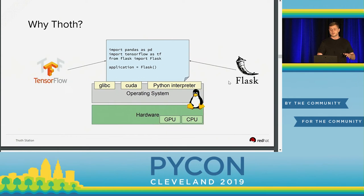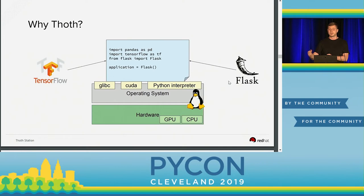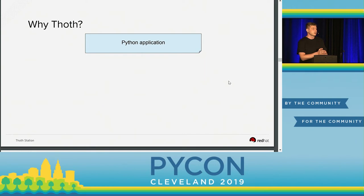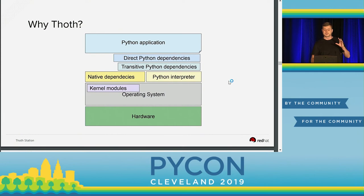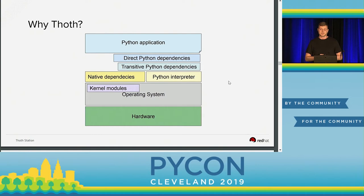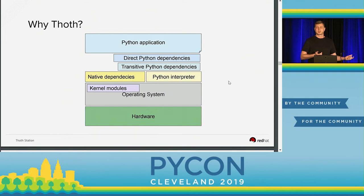The operating system runs on some hardware — you have different types of CPU and different types of GPU. So we are basically multiplying with more and more combinations. If we abstract what I've just described: we are developing a Python application that has direct dependencies, which also have transitive dependencies, running with a Python interpreter that can be in different versions, using native packages provided by the OS, which also has kernel modules, and this all runs on hardware. So you have a lot of combinations.